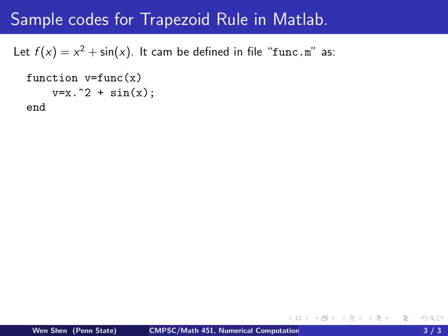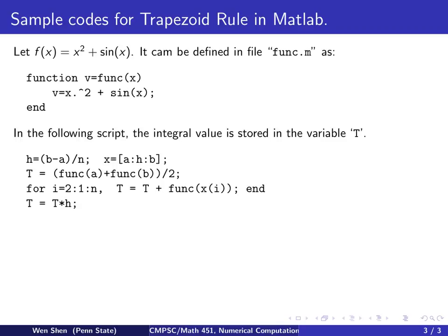Now let's look at how to code this in MATLAB. For a function f(x) = x² + sin(x), we define it in MATLAB and call it 'func', saved as the file func.m. The file contains three lines: the function signature 'function v = func(x)', where x is the input, v is the output, and v = x² + sin(x). We require this function to handle a vector input x and return a vector v, so we use x.^2 (the element-wise square) instead of x^2.